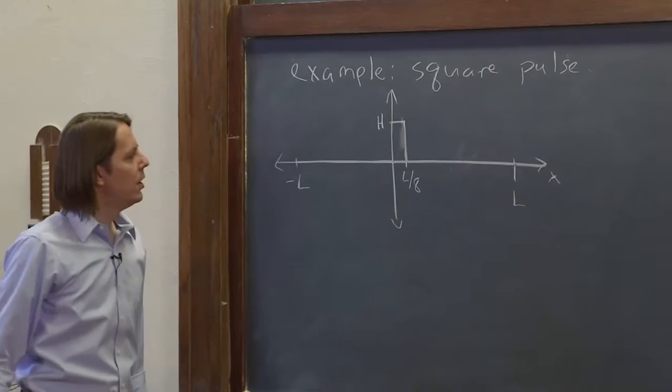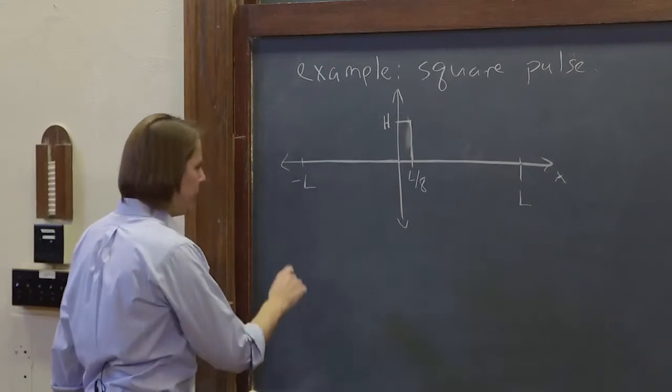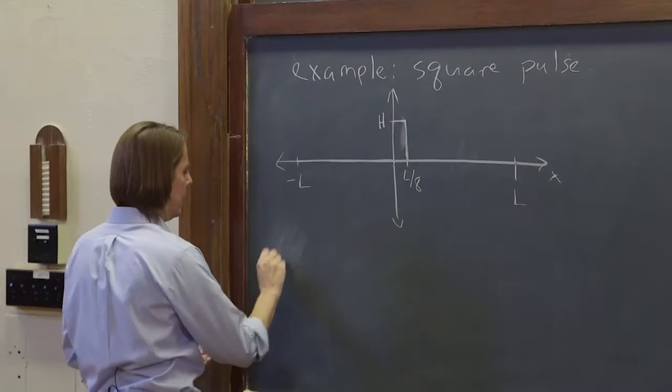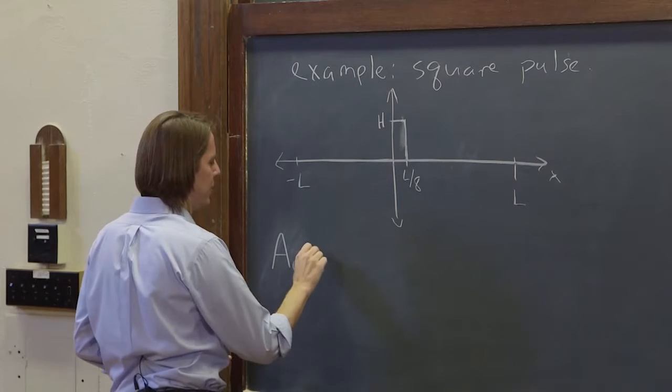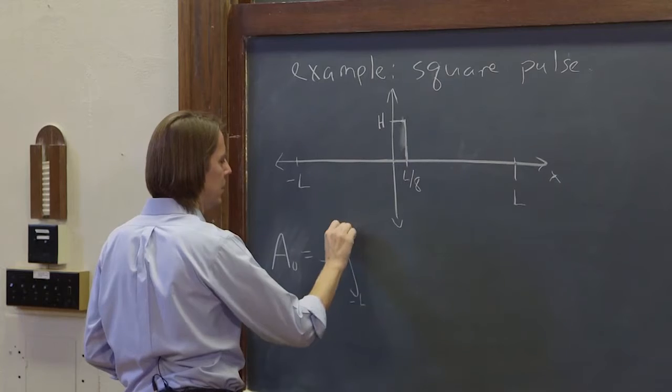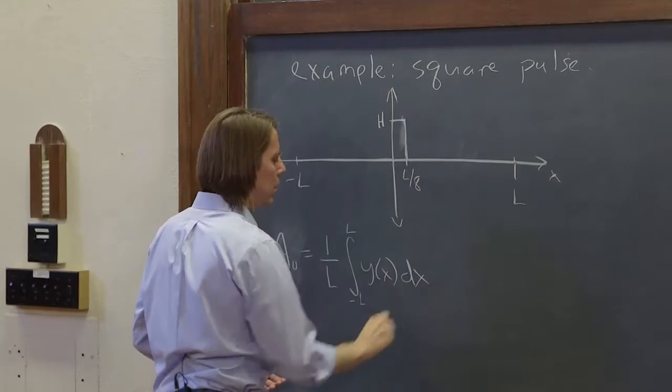So we want to describe that with our general Fourier series. We'll start with a0, that was the constant term. a0 is equal to 1 over l times the integral from minus l to l of the function y of x dx.